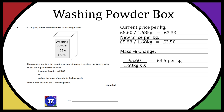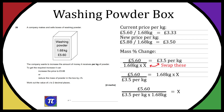We can rearrange: swap £3.50 per kg with 1.68 kg × x, giving £5.60 divided by £3.50 per kg equals 1.68 kg × x. Dividing both sides by 1.68 kg gives x = £5.60 / (£3.50 × 1.68 kg). The pounds and kg units cancel out.